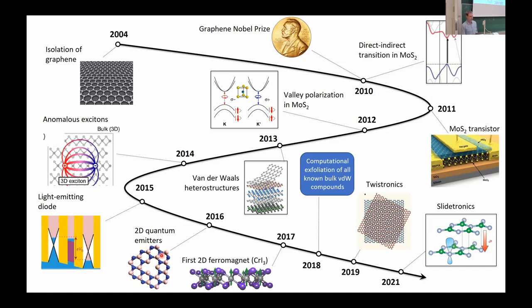Another area where we are quite active is looking at defects in 2D materials. Such defects can be used to emit single photons and to store localized electron spins, which has potential within quantum technologies. 2D magnetism is also quite a hot topic, and that's an area where we're working. There's also twistronics and slidetronics, where one can slide layers relative to each other and use that to change the polarization of the material electrically — also a very interesting subfield of 2D materials.